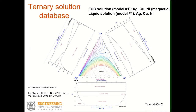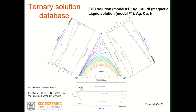If you look at the silver and nickel binary system, both silver and nickel are FCC. However, there is almost no mutual solubility. So it is a very big miscibility gap between the two, and also even in the liquid phase you have a liquid miscibility gap.